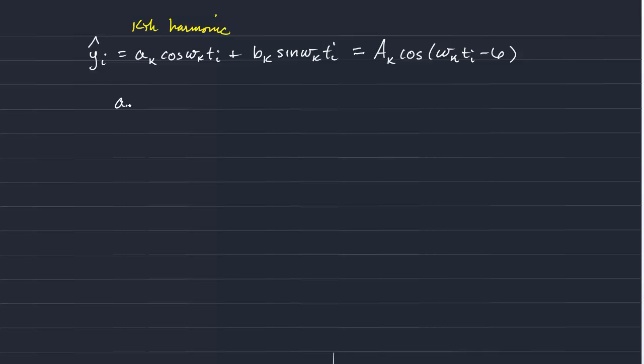And remember that a sub k is equal to A cosine phi k. I should write that as a phase shift k.